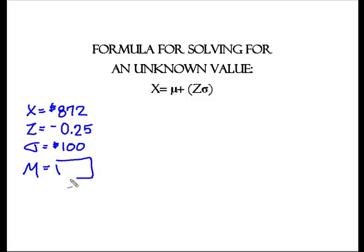Alright, so here I am and I am going to plug in what I know into my, as I call it, the magic formula. I know x was equal to $872, I knew that the z was a negative 0.25, I knew that the standard deviation was $100, but I don't know what the mean of the distribution is. So, that's my unknown. So, I am going to say 872 equals an unknown value of the mean plus a negative 0.25 times the value of my standard deviation of $100.